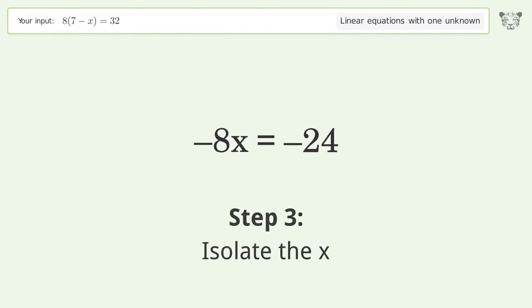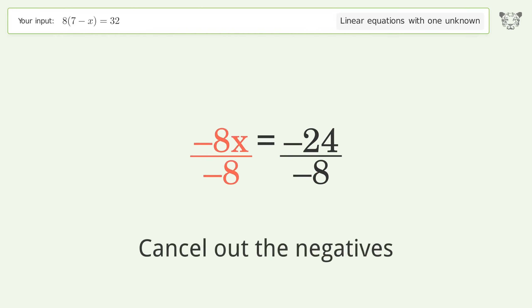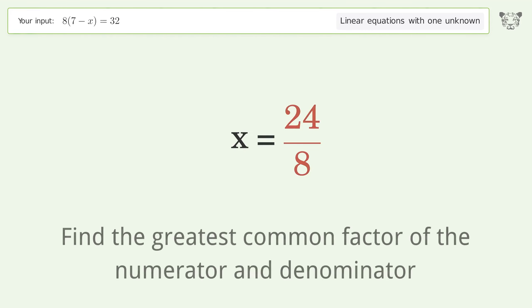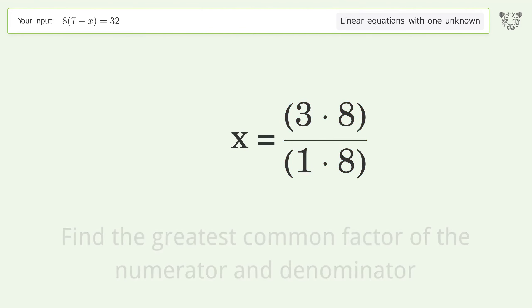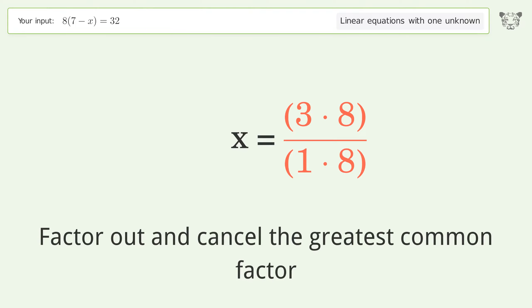Isolate the x by dividing both sides by negative 8. Cancel out the negatives and simplify the fraction. Find the greatest common factor of the numerator and denominator, then factor out and cancel the greatest common factor.